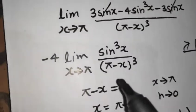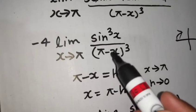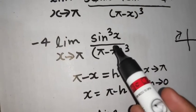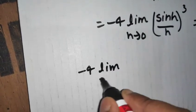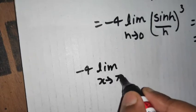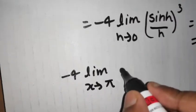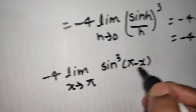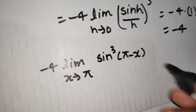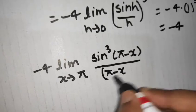One more method would have been there instead of transforming it to h tending to 0. We would have used some more trigonometry. You would have written this minus 4 limit x tending to pi. Sin cube x were there in numerator. So you would have written this as sin cube pi minus x because sin pi minus x is sin x only and in denominator you already have pi minus x whole cube.